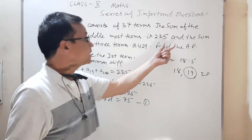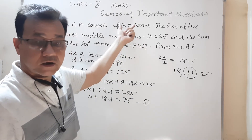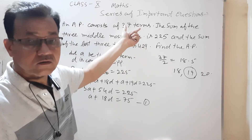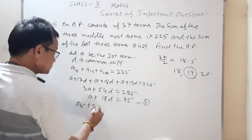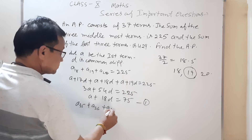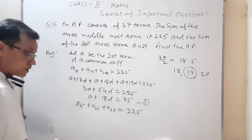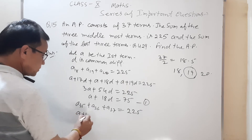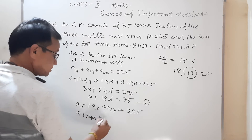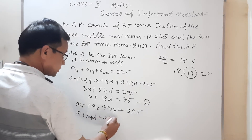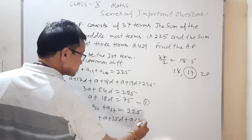अब sum of the last 3 terms: 37 terms हैं, तो last तीन terms होंगी 35th, 36th, और 37th। यानी a₃₅ + a₃₆ + a₃₇ = 429। इनकी value convert करें: a₃₅ = a + 34d, a₃₆ = a + 35d, a₃₇ = a + 36d।